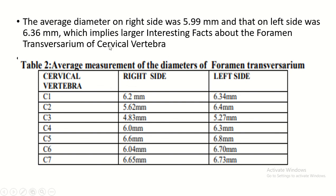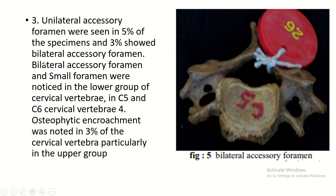Interesting facts include the presence of accessory foramina. Unilateral accessory foramen is seen in 5% of specimens, and bilateral accessory foramen is seen in 3%. Bilateral accessory foramina are small and are noticed more in the lower group of cervical vertebrae, particularly at C5 and C6.